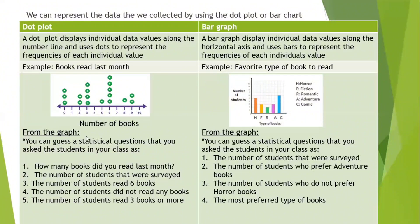So from the graph, you can guess statistical questions that you asked the students in your class. Number one, how many books did you read last month? So I will ask and each one will say his number of books. Two, the number of students that were surveyed. How many were surveyed? How many students?